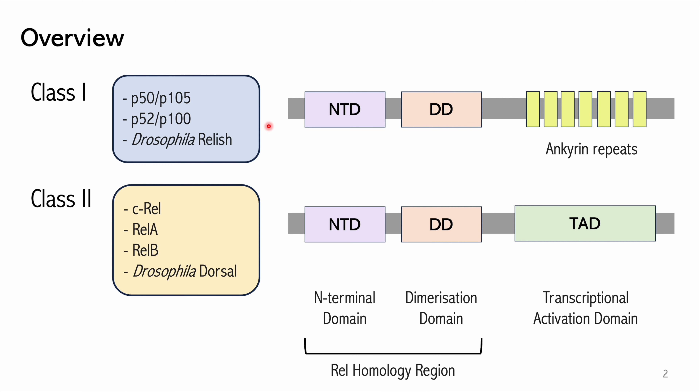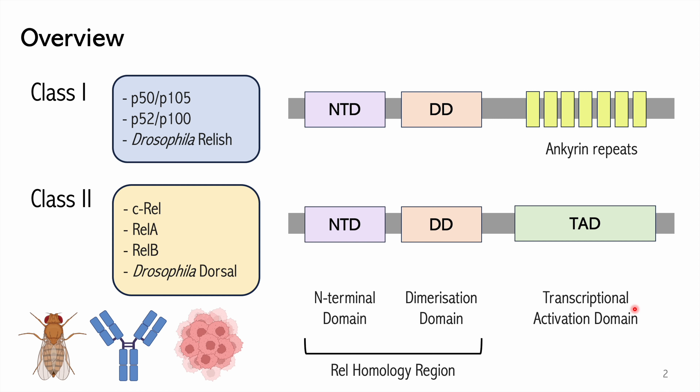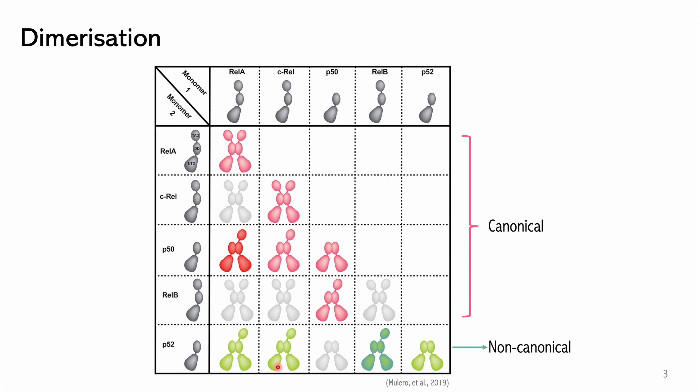The C-terminus of the class 2 protein has a transcriptional activation domain, so they have an inherent ability to activate transcription, while class 1 requires the aid of other proteins. The importance of this family spans from development to immunity and cancer.